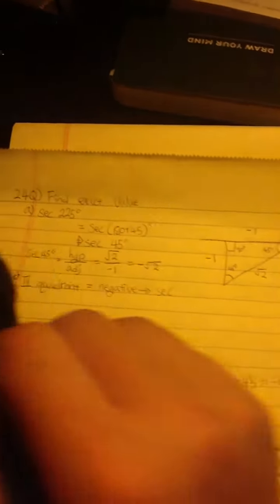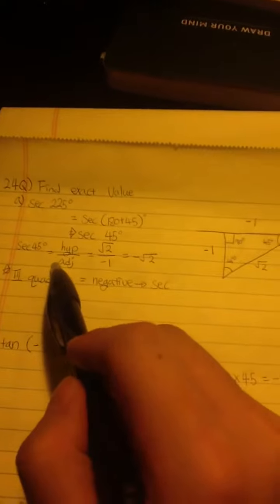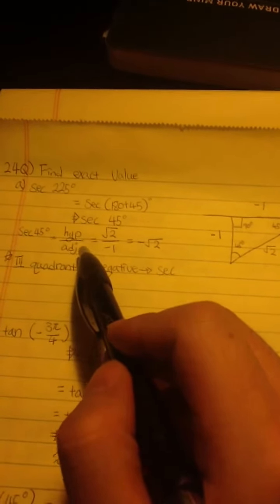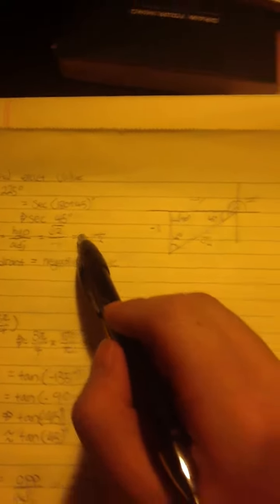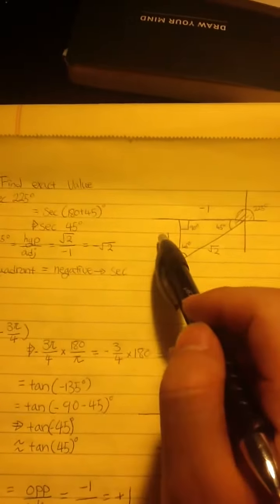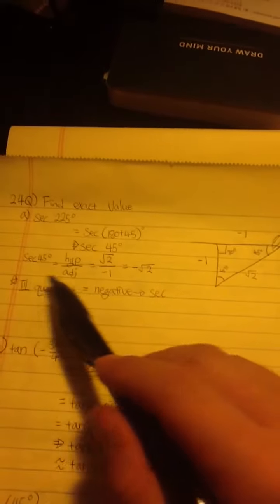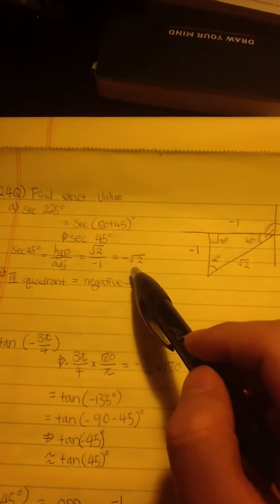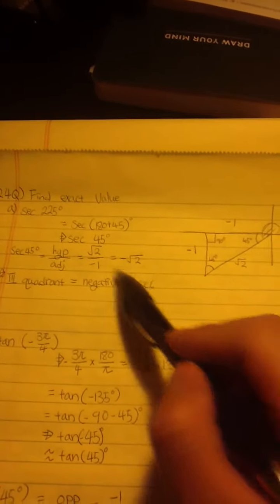So I use this to solve secant 45, which is equal to hypotenuse over adjacent. Hypotenuse, which is the square root of 2, over adjacent, which is negative 1, which makes secant 45 negative square root of 2. That's the answer.